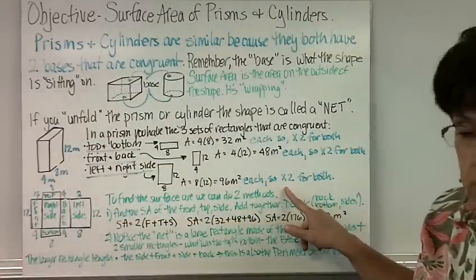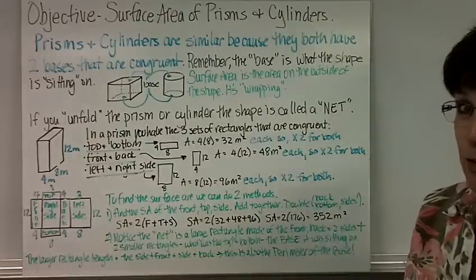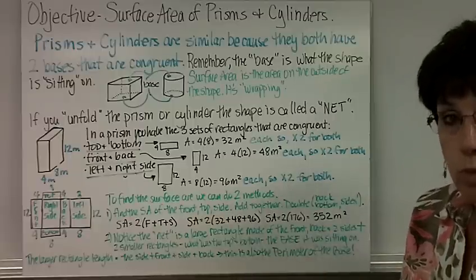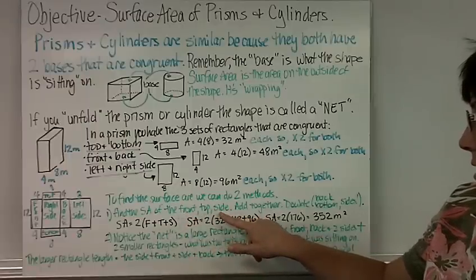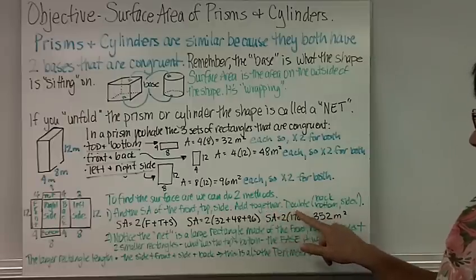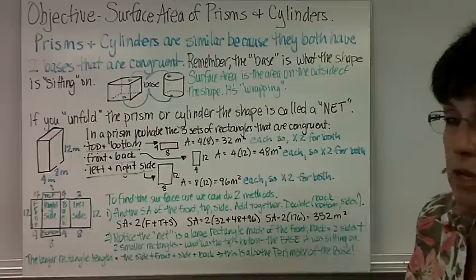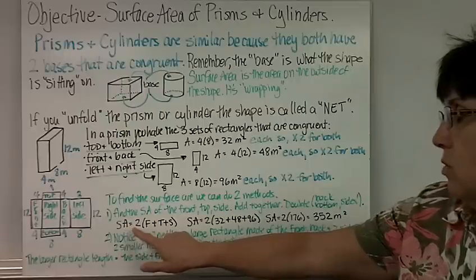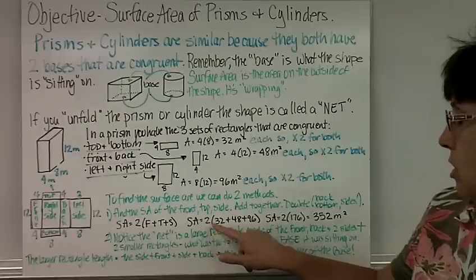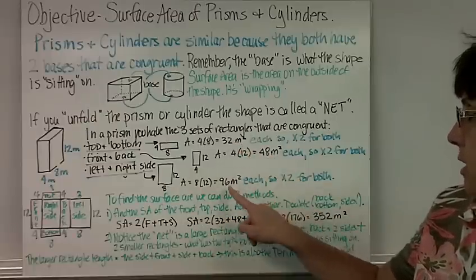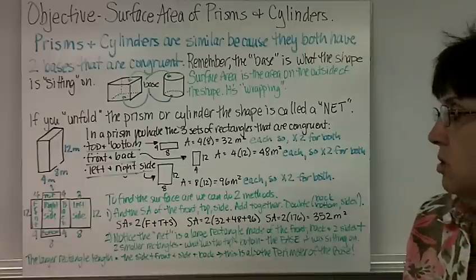To find the surface area, we can use two methods. The first method: find the surface area of the front, the top, and the side, add them together, and then double it to account for the back, the bottom, and the other side. The formula is: surface area equals 2 times (area of the front + area of the top + area of the side), or 2 times (32 + 48 + 96) = 2 times 176 = 352 meters squared.